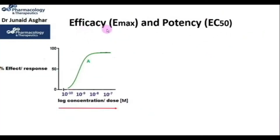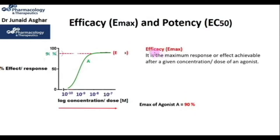Let's see what is efficacy or Emax and potency or EC50 of an agonist. Efficacy or Emax is the maximum response or effect achievable after a given concentration or dose of an agonist.